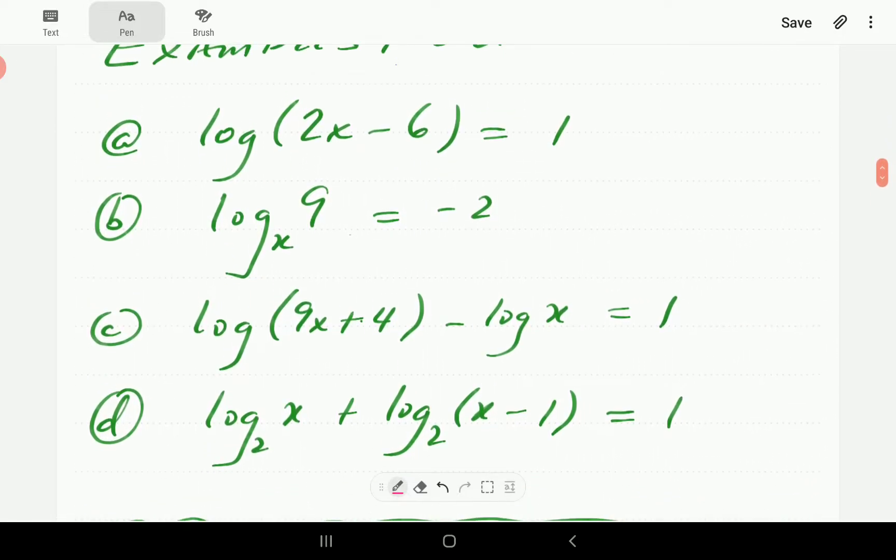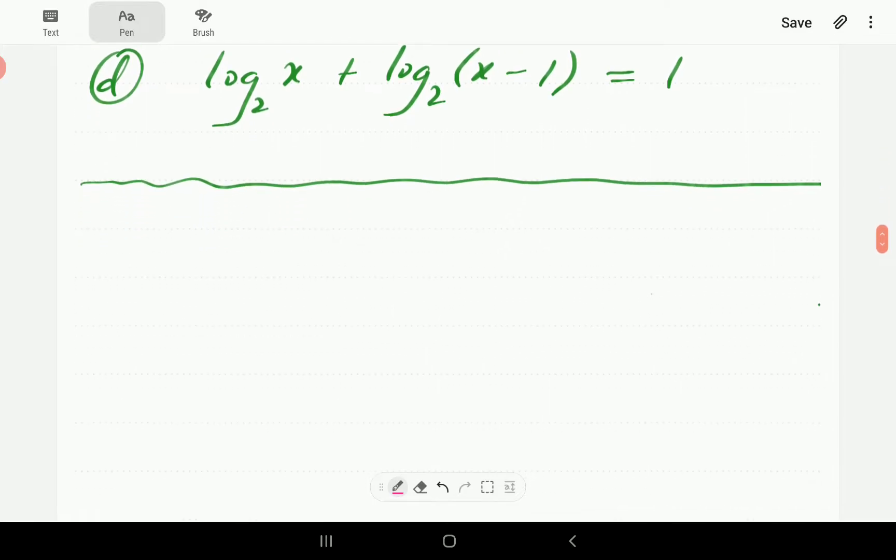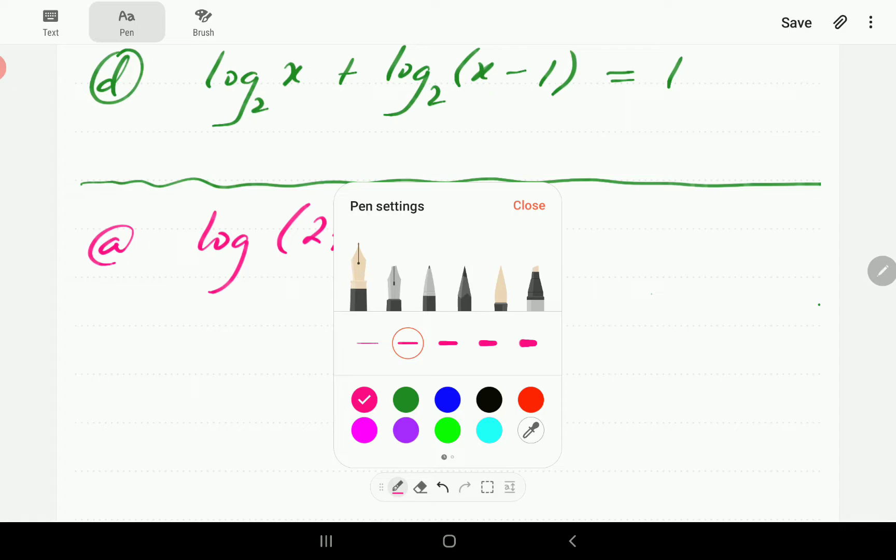In number one, we've got log of 2x minus 6 is equal to 1. So this has got only one log term, so we're simply going to go ahead and write this in exponential form.